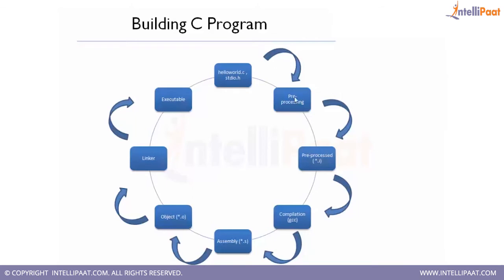The build process goes through a cycle. First, your hello_world.c and stdio.h are given to the compiler. Before compiling, preprocessing occurs — merging all required files, such as the header file and the .c file, into one .i file. The GCC compiler then compiles the .i file, checking for compilation errors. If successful, it generates an assembly-level file (.s file). The assembly-level code is then checked by the assembler, which generates a .o file — machine-level instructions.